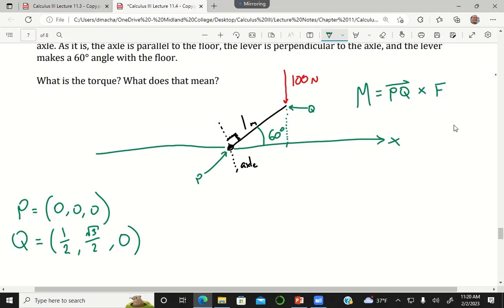So then my vector, this PQ vector, is going to be the vector that is just one half, root three over two, zero.